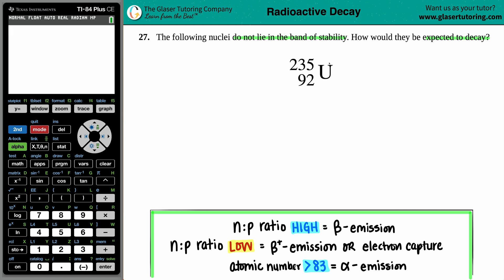So we have uranium. They're saying that it already doesn't lie in the band of stability, which means that this is an unstable nuclei. And it's so unstable that it's classified as being radioactive, which means that it's going to start decaying and decaying until it finds a nuclei that is stable.